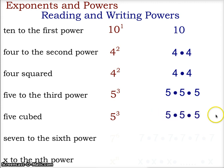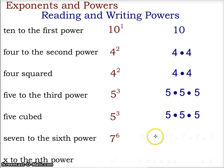7 to the sixth power: 7 is our base, 6 is our exponent, and we will multiply six 7s together — 7 times 7 times 7 times 7 times 7 times 7.